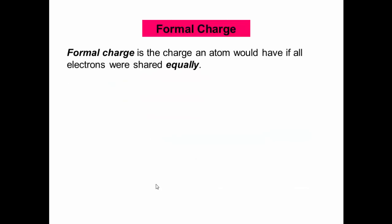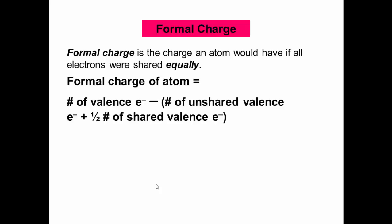Formal charge is the charge an atom would have if electrons were shared completely equally. The formula for calculating formal charge is: number of valence electrons minus the sum of the number of unshared electrons plus half of the number of shared electrons.